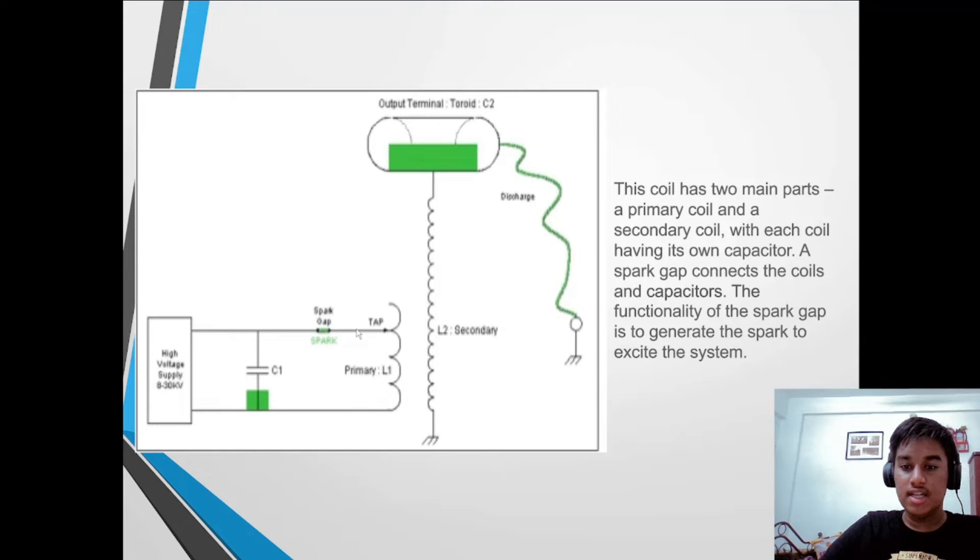A spark gap connects the coil and capacitor. The functionality of the spark gap is to generate the power to excite the system.